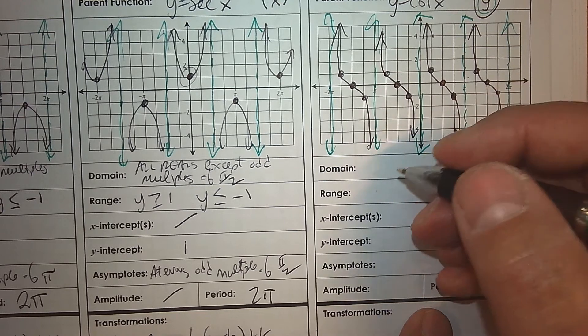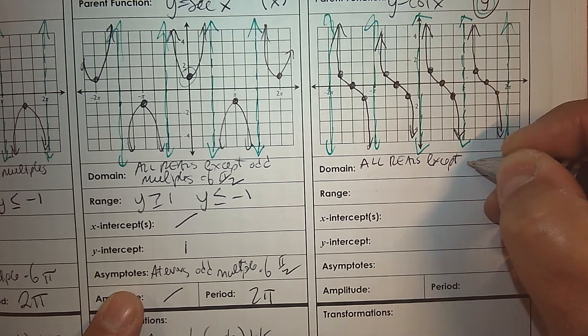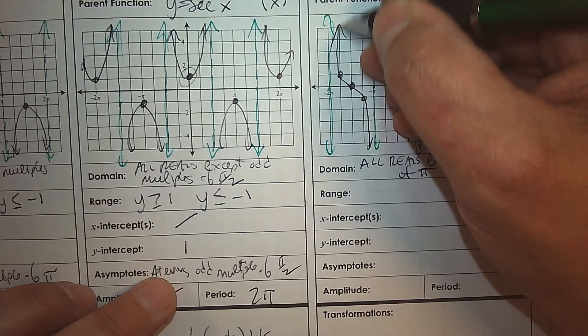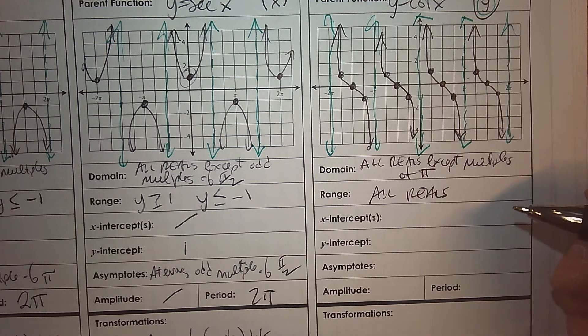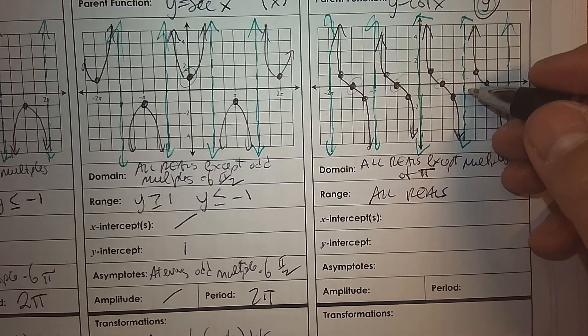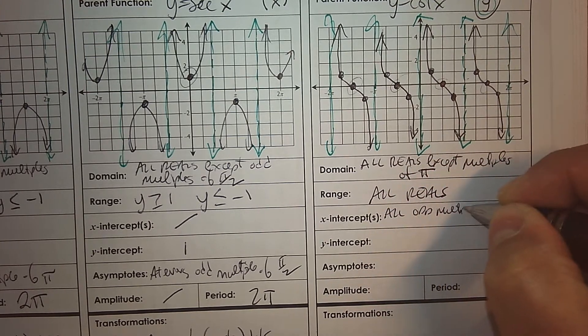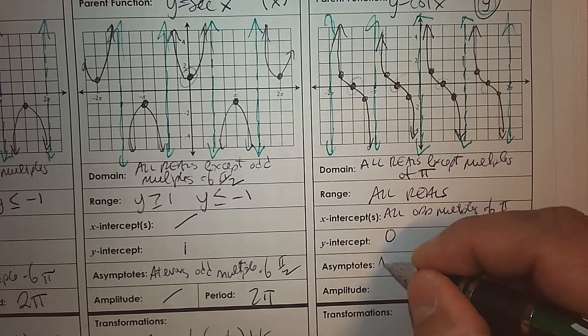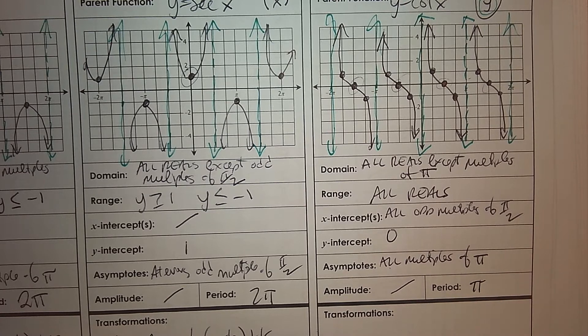What's the domain here? Well, the domain is exactly the same as cosecant. So it's all reals except multiples of pi. The range, notice it goes up forever and down forever. So the range is actually all real numbers, everything. The x-intercept. Well, x-intercepts are everywhere here where it crosses the x-axis. So it's all multiples, all odd multiples of pi over 2. It crosses the x-axis. The y-intercepts 0. The asymptotes are all multiples of pi. There's an asymptote, no amplitude, and the period here is pi to complete one cycle or one period.